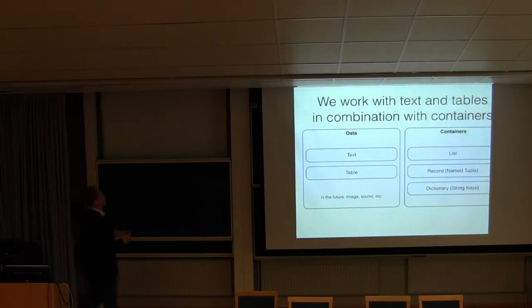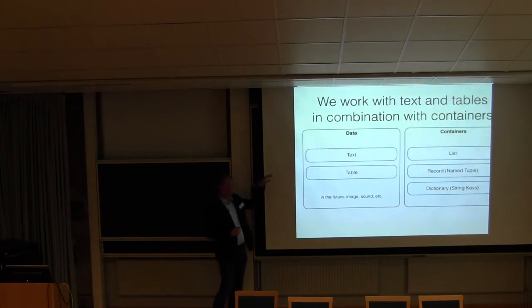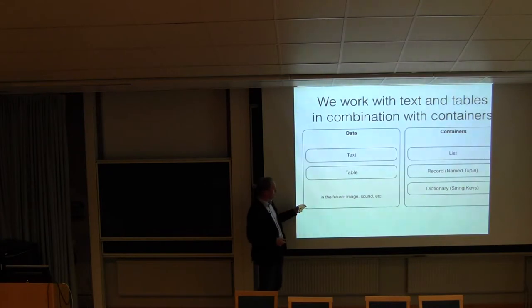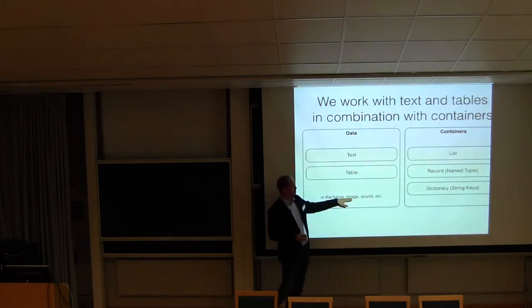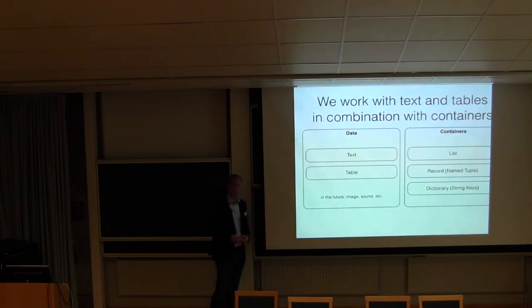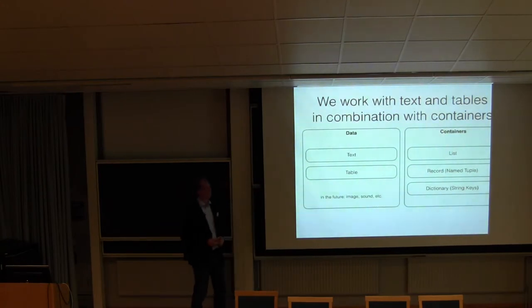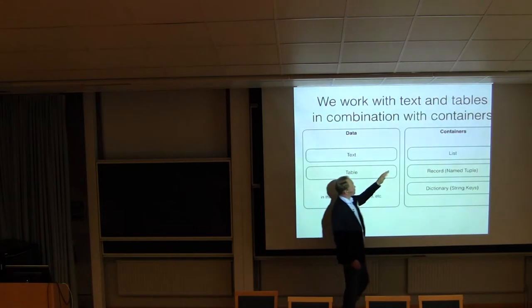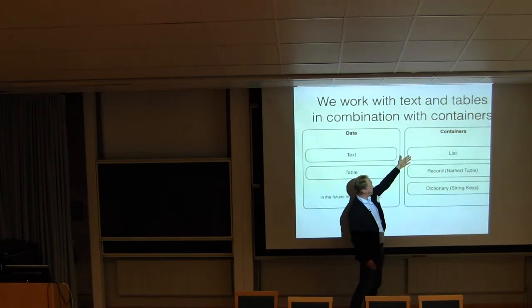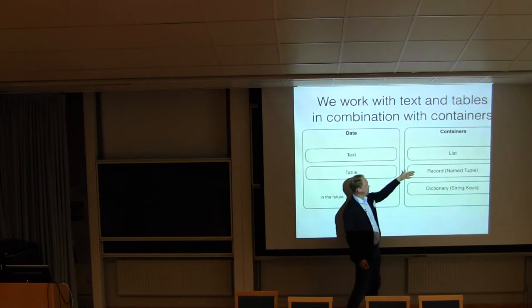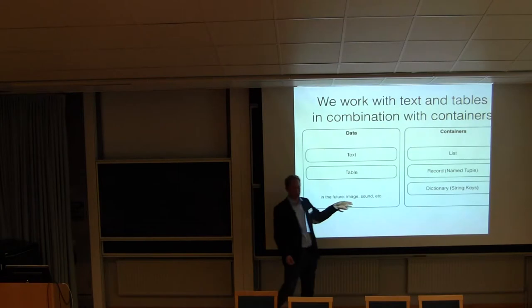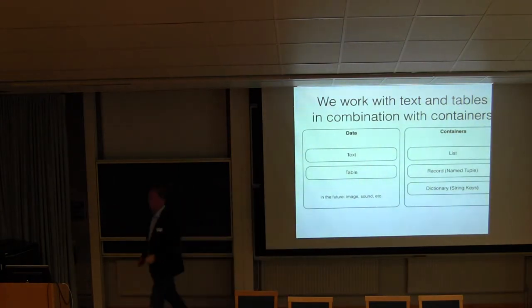So right now we have two basic data types which we call text and table. We decided not to go down on double, integer and so on. We decided to use more like high level data types because it's easy to be used to understand. We thought that in the future we could use images, sound. A movie could be a list of images, for example. And we also added some containers. We have list containers. We can have lists of these things. We have records which are essentially named tuples. And dictionaries which only have string keys.